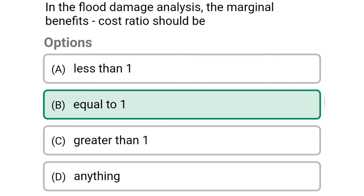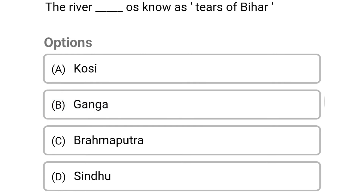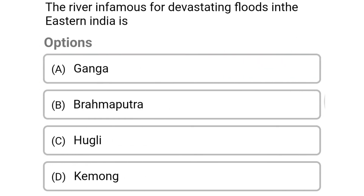The correct answer is option B: equal to one. Next question: the river known as the 'sorrow of Bihar' is — option A: Kosi, option B: Ganga, option C: Brahmaputra, option D: Sindhu. The correct answer is option A: Kosi.